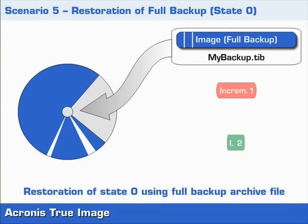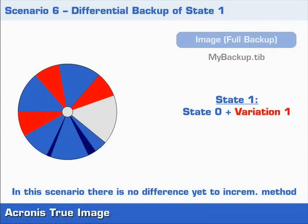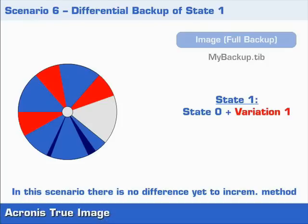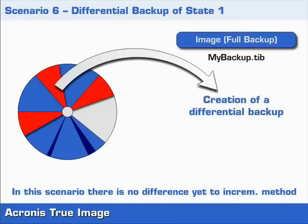We now come to the Differential Backup method and its differences in comparison to incremental backups. Scenario 6 is where we do a differential backup of stage 1, and it has the same surrounding conditions as Scenario 1 using the incremental procedure. There is no difference yet between using each of the methods. Upon starting the process, the Differential Backup will only handle those files that have been changed since the full backup was made.